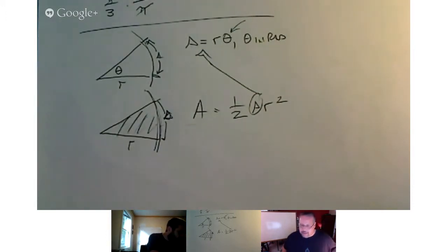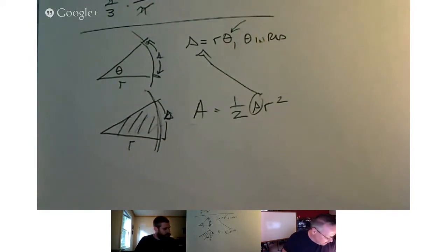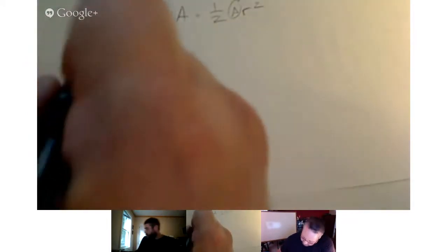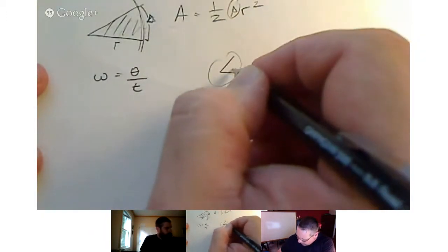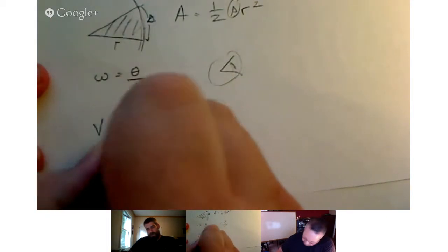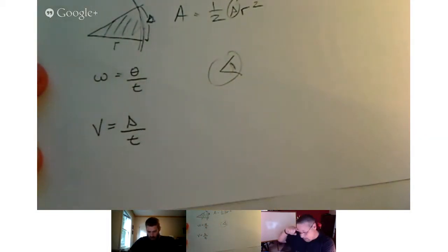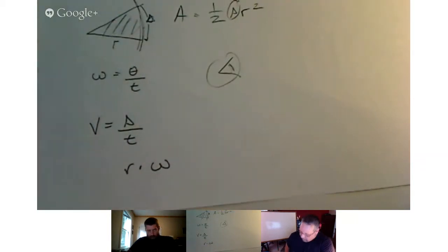The big thing out of the 6.1 section was angular speed and linear speed — I think that's where our application problems are going to come into play. Angular speed was in terms of omega, so omega equals theta over time. That gives us how fast the radians went. Linear speed, on the other hand, was equal to the sector length over time, or it was also equal to the radius times the angular speed.